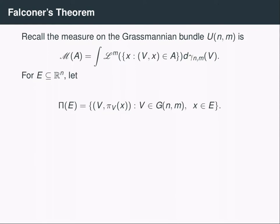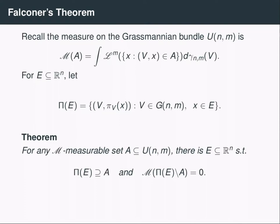We're going to define a projection operator capital Pi. Pi of a set E is essentially the orthogonal projection of the set E onto every M-dimensional plane simultaneously — it's a subset of the Grassmannian bundle you get when you do that. More specifically, it's the set of all possible pairs of a plane with the projection of a point into that plane, as I vary over all planes of my Grassmannian and all points inside my set E. Falconer's theorem can then be stated as follows: for any measurable set A in my Grassmannian bundle, I can find a set E whose projection contains A, such that the measure of the difference between the projection and A is equal to zero.